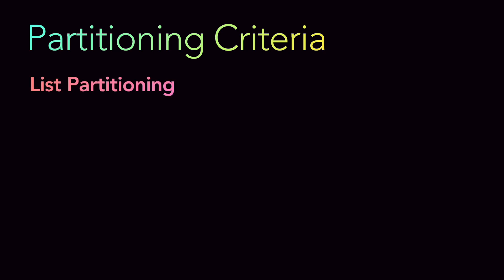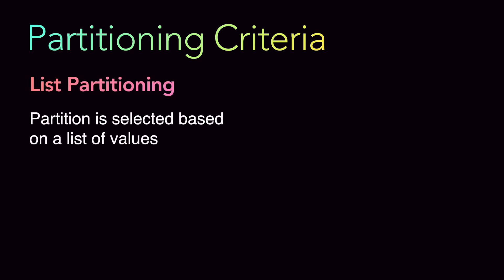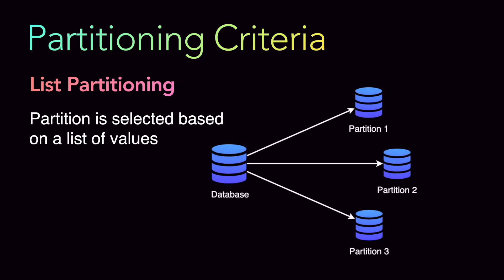The next one is list partitioning — data is selected based on a list of values. For example, partition one stores data from all regions in the USA, such as New York and Florida. Partition two might contain all data from India — like Delhi, Kolkata, Chennai, and other places. So you are partitioning based on a predefined list of values.